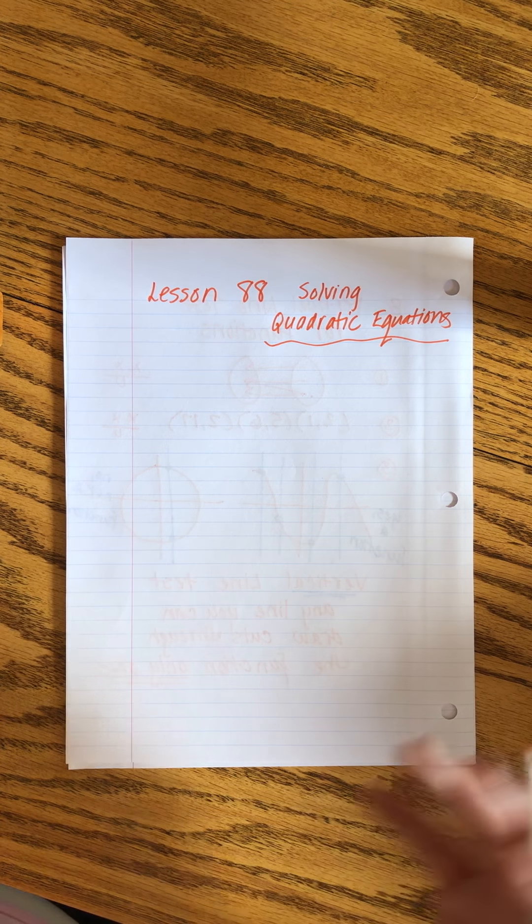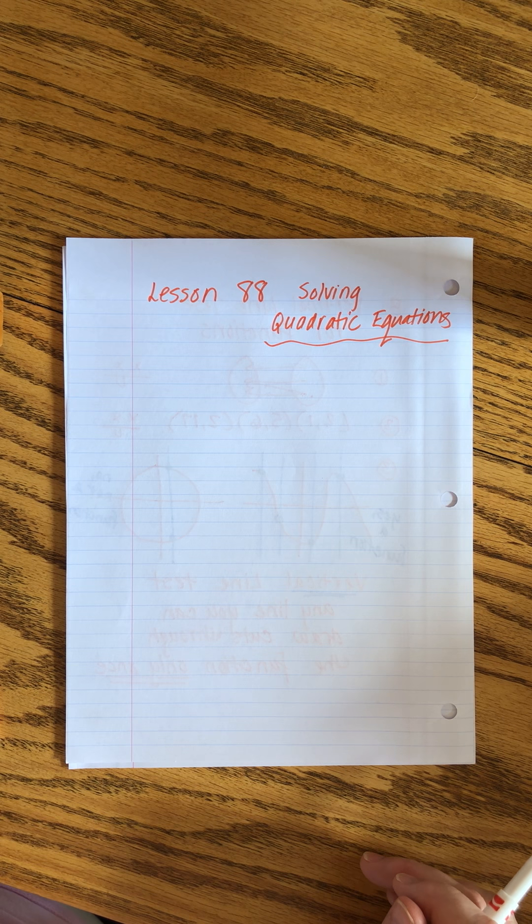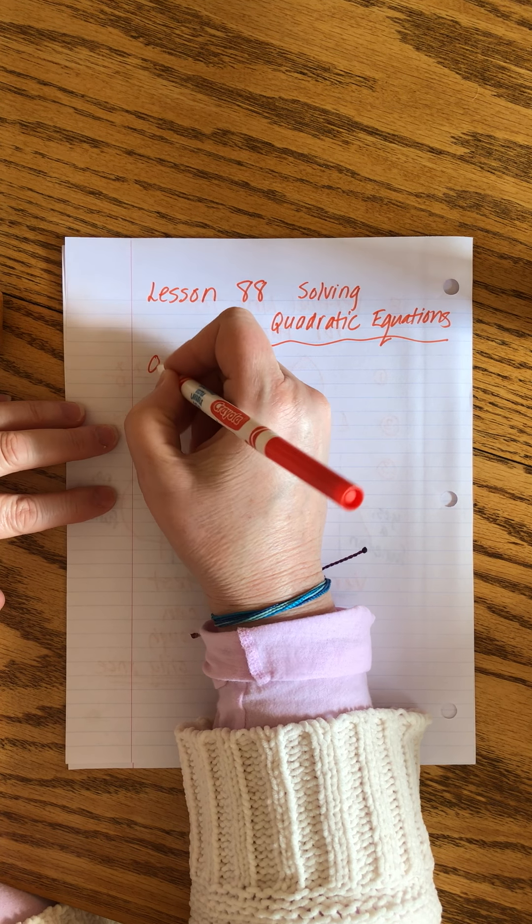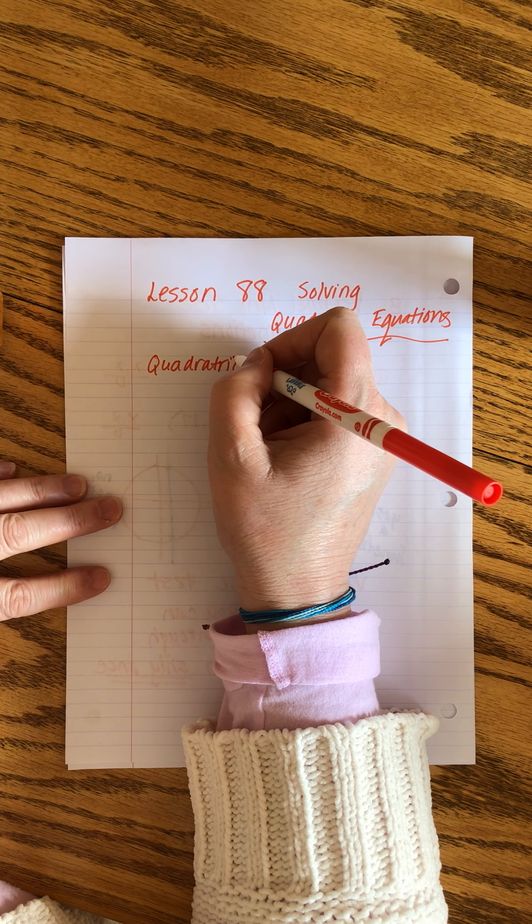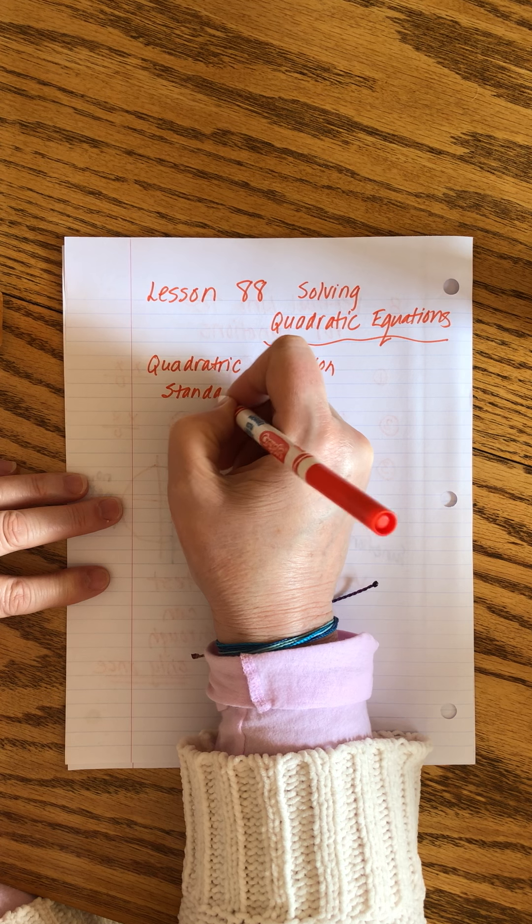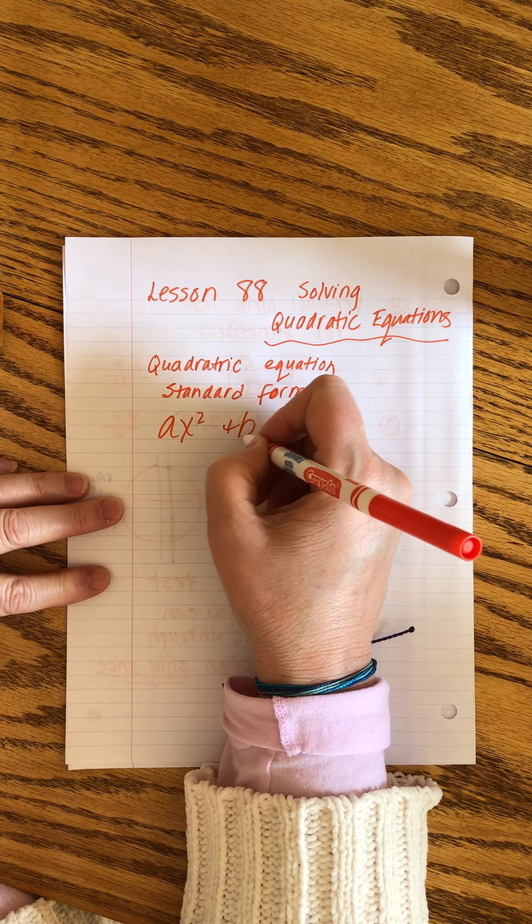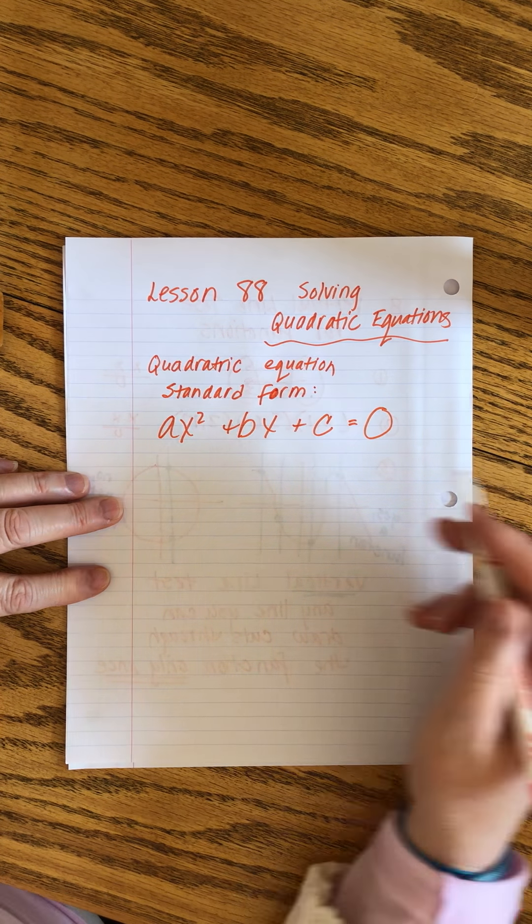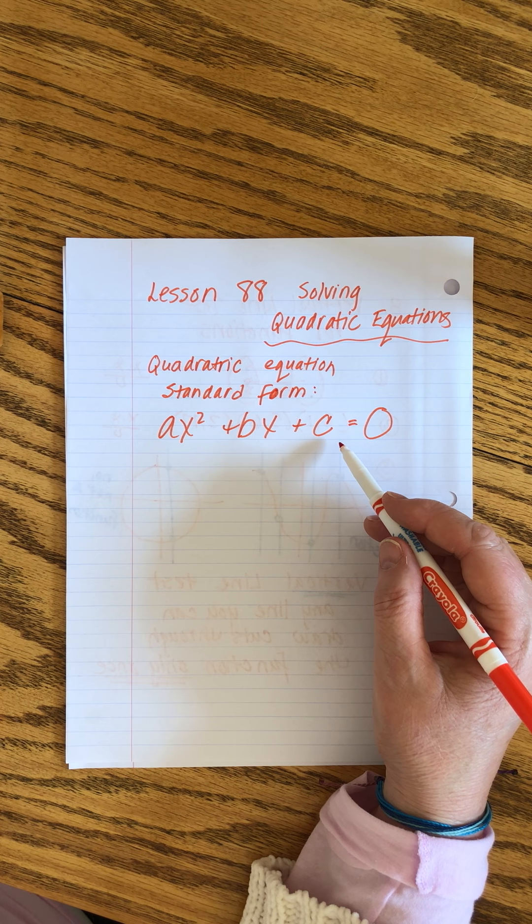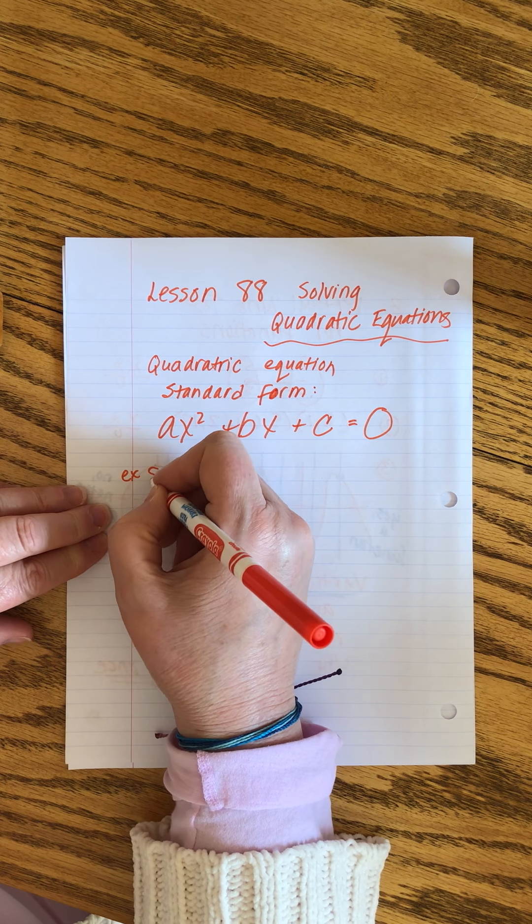What we're going to do in this lesson is bring together a lot of little steps that we've been working on. It's just consolidating a number of different factors. The first thing I want to remind you is that the standard form of a quadratic equation is ax squared plus bx plus c equals 0. This is our starting point for all of these equations.